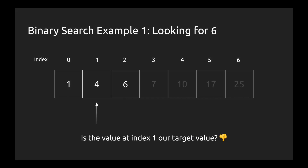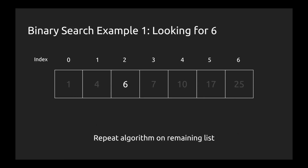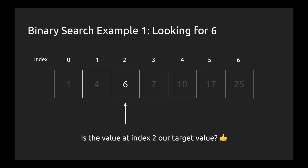We ask ourselves, is the value at index 1 our target value? No it's not — that value is a 4, we're looking for a 6. We ask, is it less than our target value? Yes it is, and by the logic we gave earlier, anything to the left of index 1 — so in this case index 0 — is also less than our target value. Therefore we toss out the 4 and the 1. We're left with just one number. When we only have one value left, we check: is that our target value? If it is, we're done. If not, the value does not exist within the list. But in this case, the value at index 2 is our target value of 6, so we're done — we found the 6.